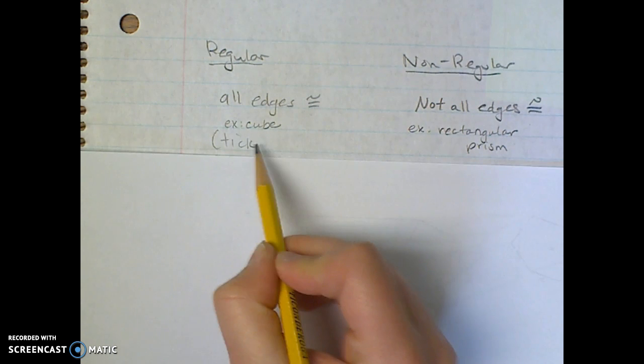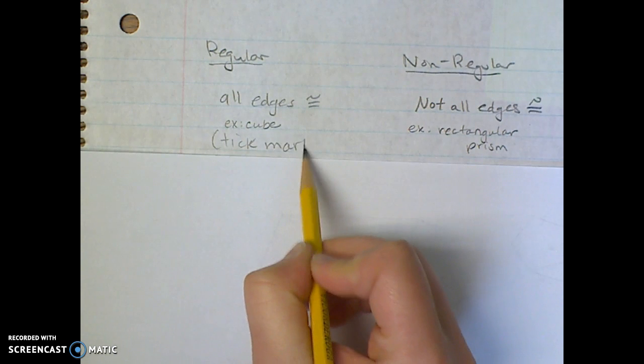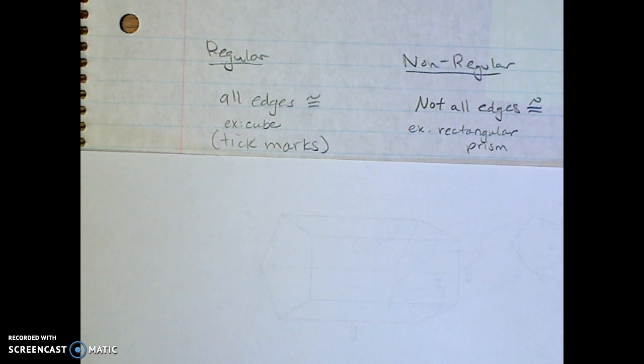So even if it has a couple of tick marks but not on every single one, it would not be regular. For example, the rectangular prism would not be regular because not all sides are congruent on a rectangle.